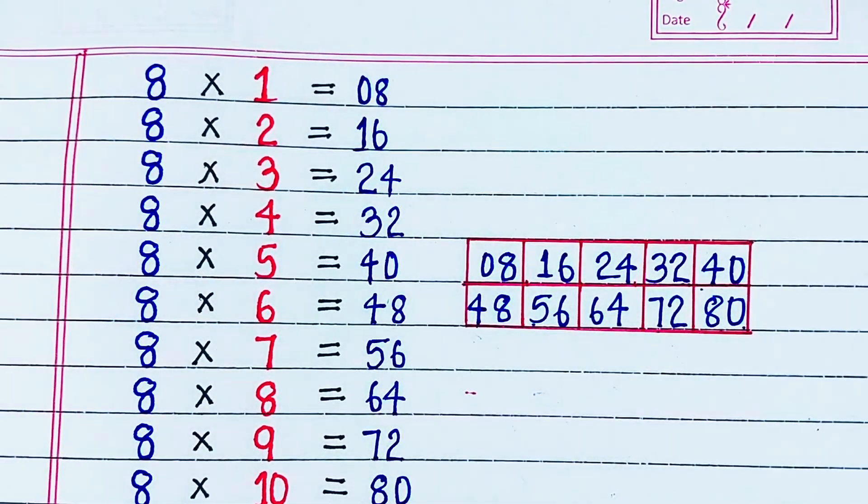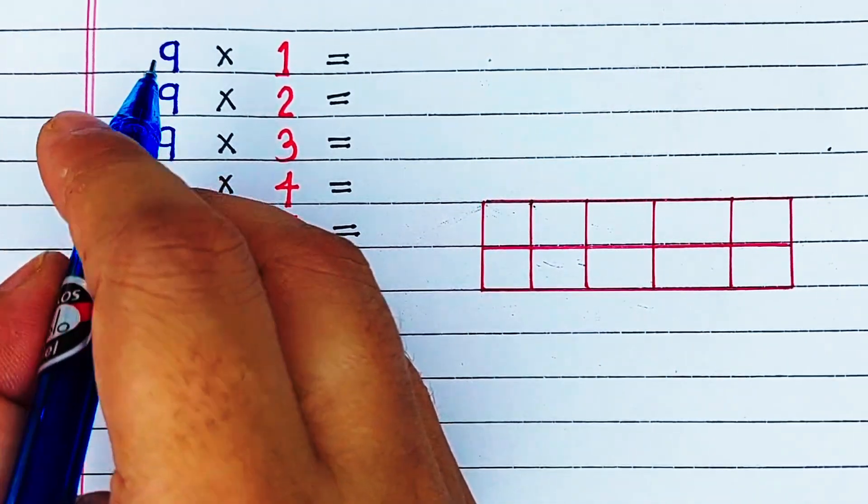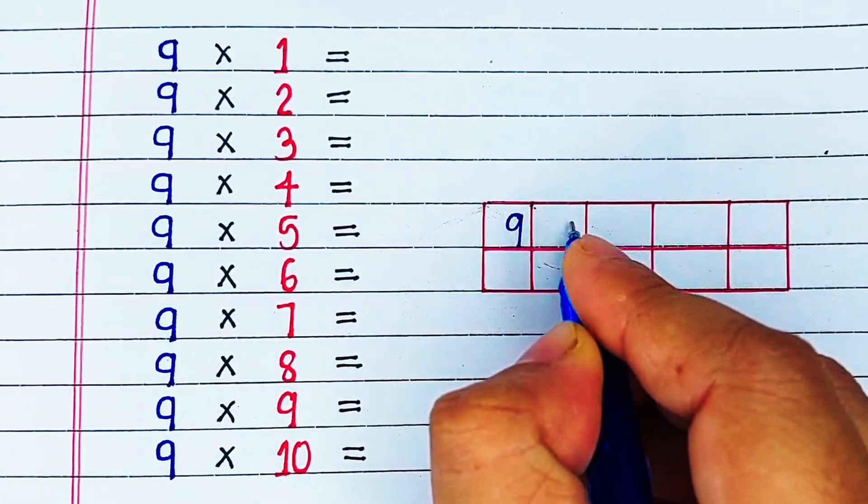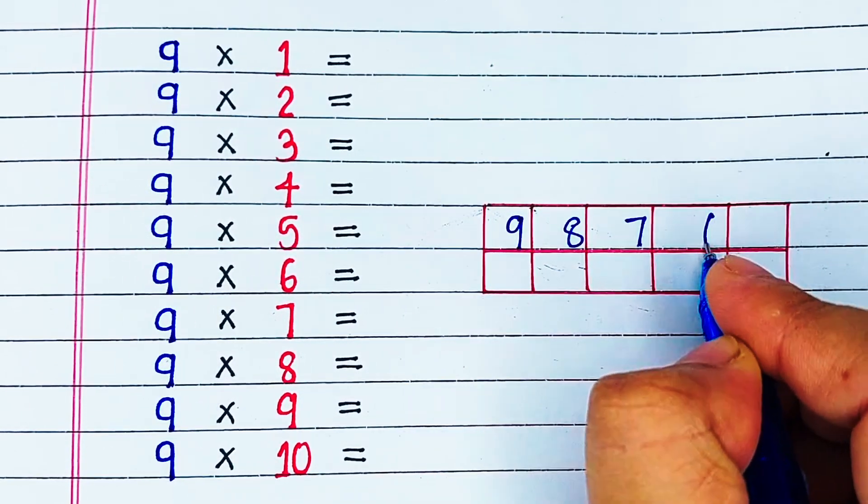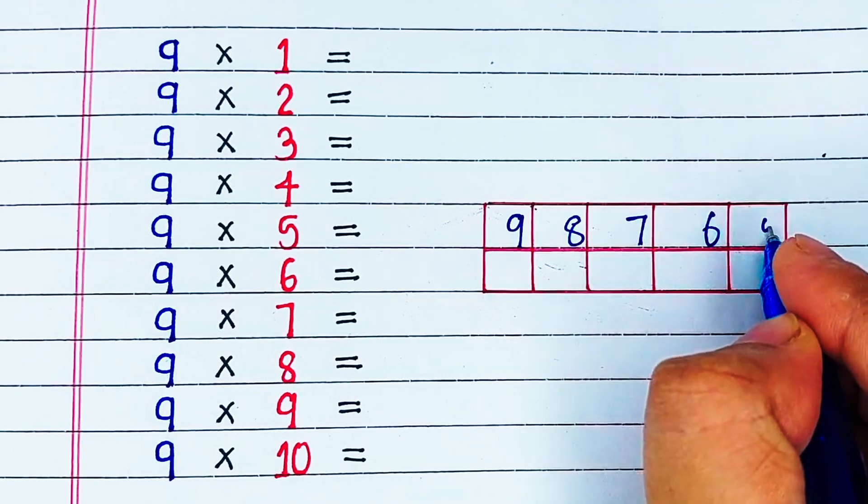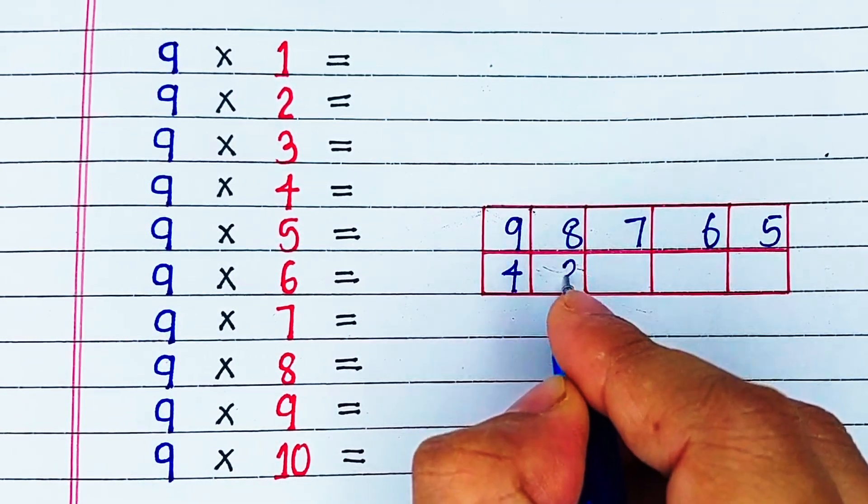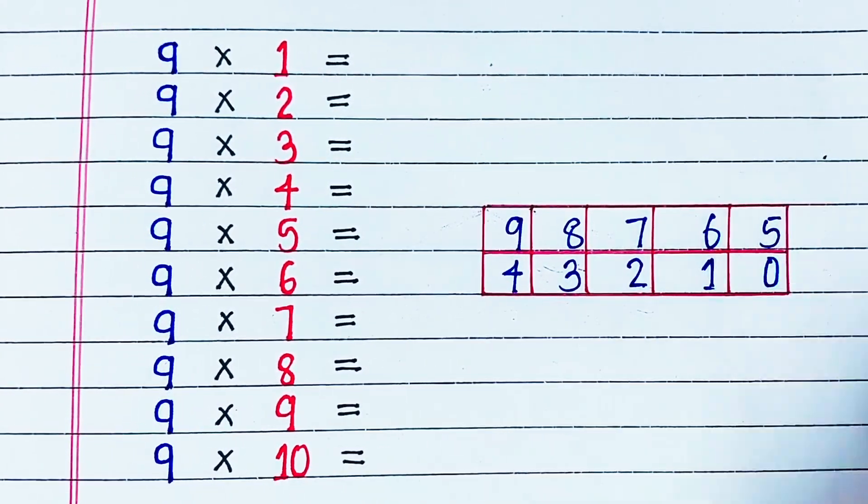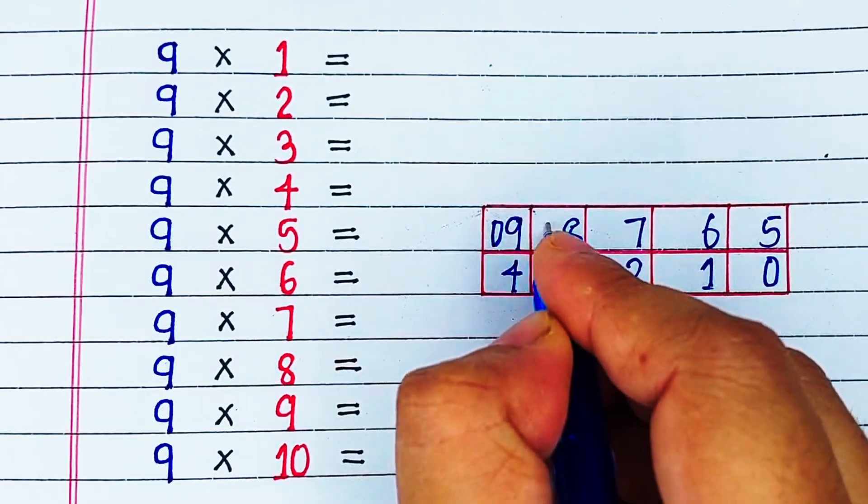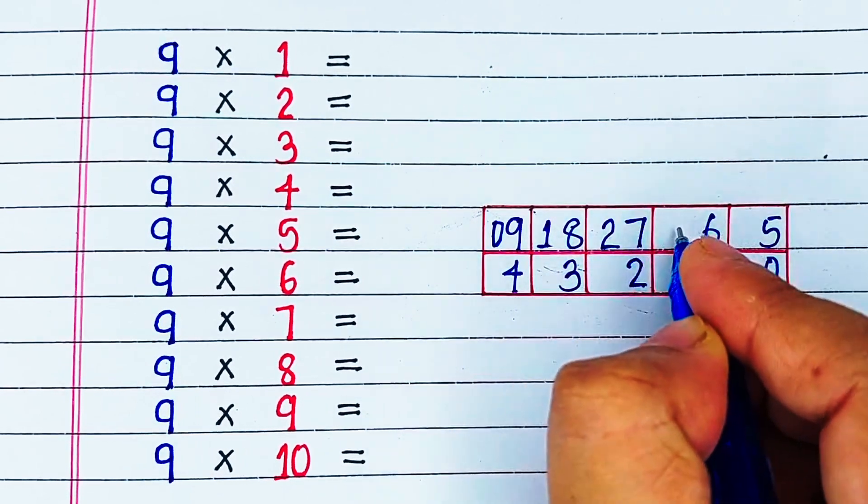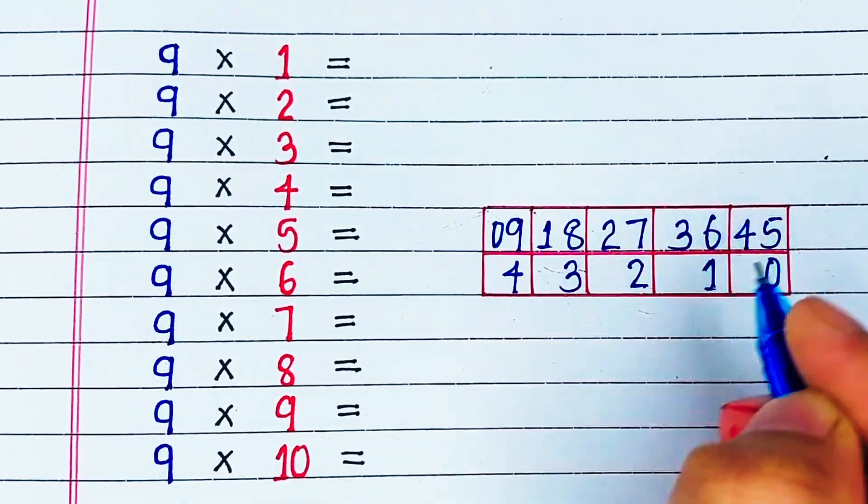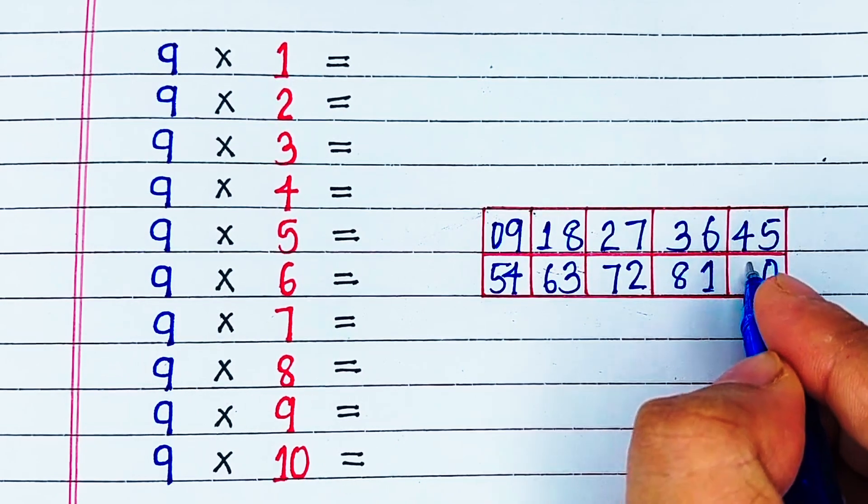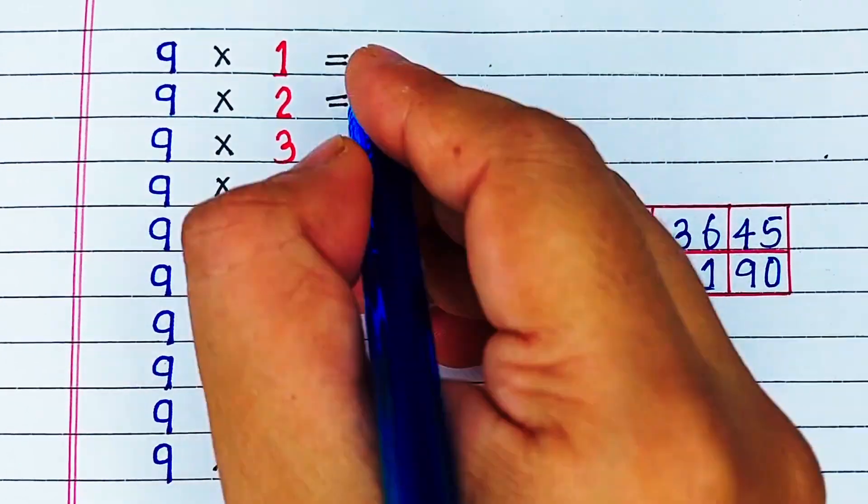Now let's learn the trick for the 9 multiplication table. We will start by drawing a 5 by 2 grid with 2 rows and 5 columns. We will start from the top left corner and we will write from 9 to 0. So we write 9, 8, 7, 6, 5, 4, 3, 2, 1, 0. Now for the tens digit, we will again start from the top left corner but this time we will write from 0 to 9. This makes our 9 times table.